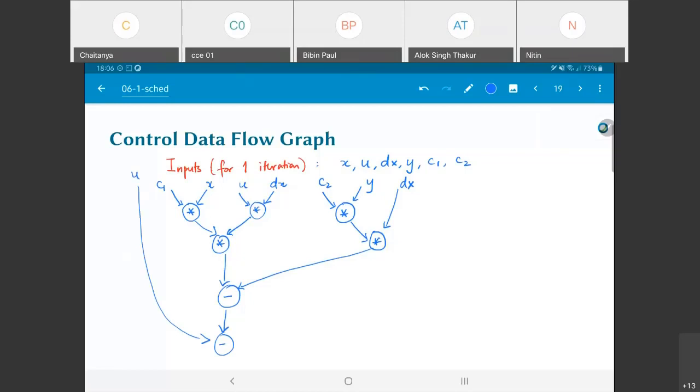Now note that this u over here and this u over here going into the multiplication, they are the same, just like the dx going into the multipliers is the same and so on. I'm just drawing it this way for convenience. What have I done? This sort of slightly complicated looking tree that I have over here is the entire set of computations needed in order to find u_l.